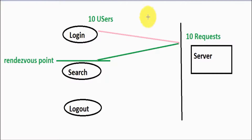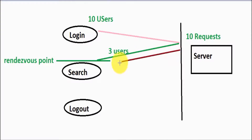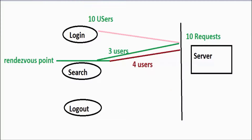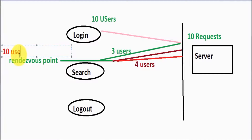For example, first three users got the response, so three users stop at the Rendezvous point. After a few seconds, four more users come and stop there — now we have seven users total. Then the next three users arrive, bringing the total to 10. Since we set the Rendezvous point for 10 users, it will now allow all 10 users to move forward to the search simultaneously.